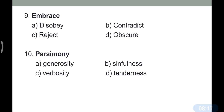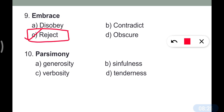Question number nine: 'Embrace.' The correct synonym is to agree or permit something. The opposite of embrace is reject — so embrace means to agree or accept something, and its antonym is reject.